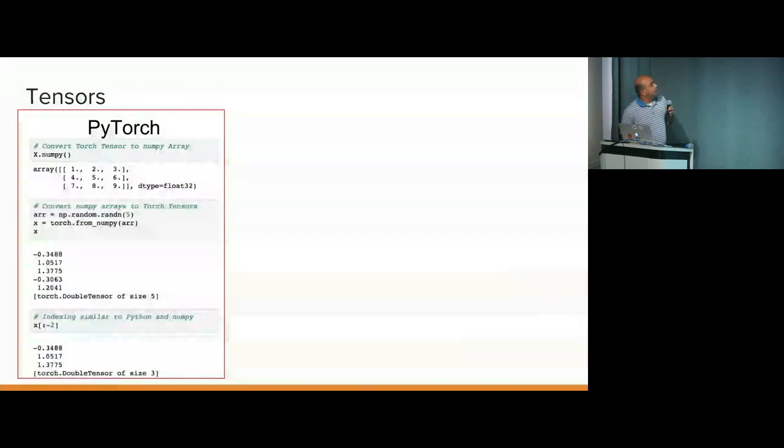Okay, so this is how your PyTorch code looks. So it's got deep integration to NumPy. So you see the first line, you can convert a tensor into NumPy. You can convert NumPy into tensor, and you can index with negative indexing. You can do everything you can do in NumPy with PyTorch.